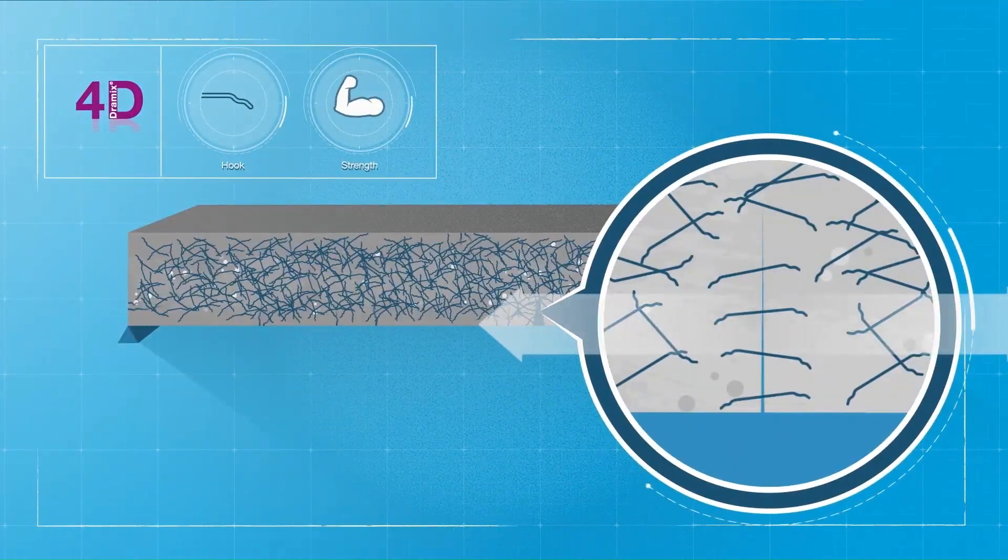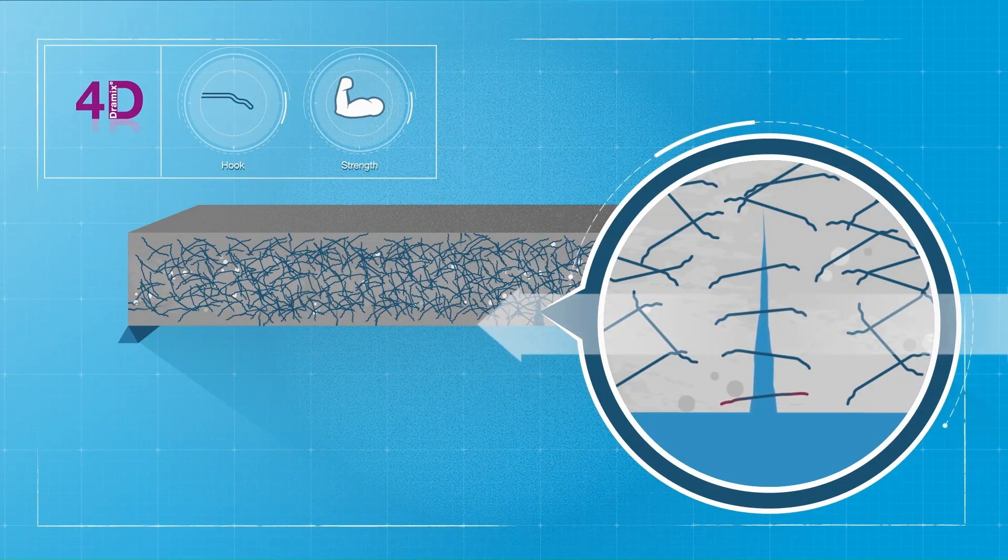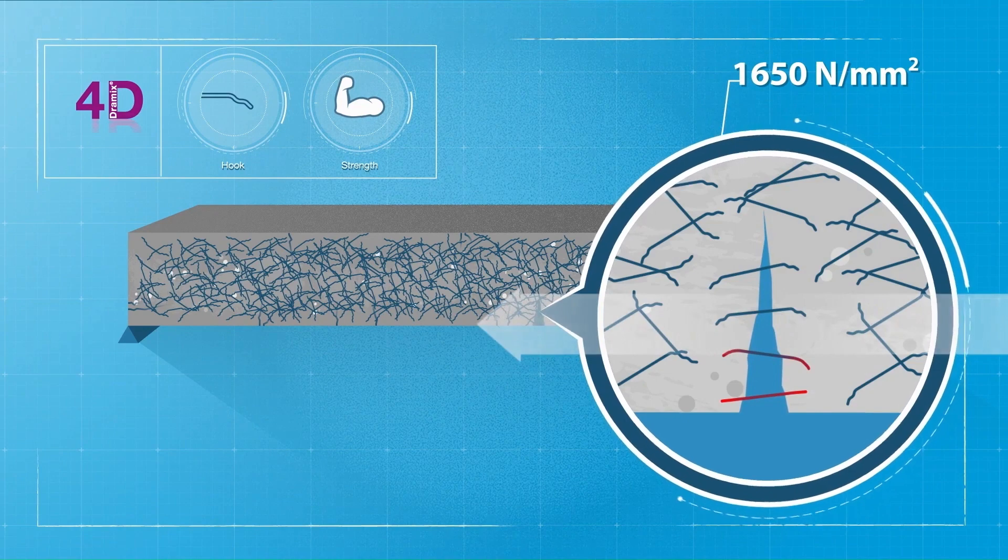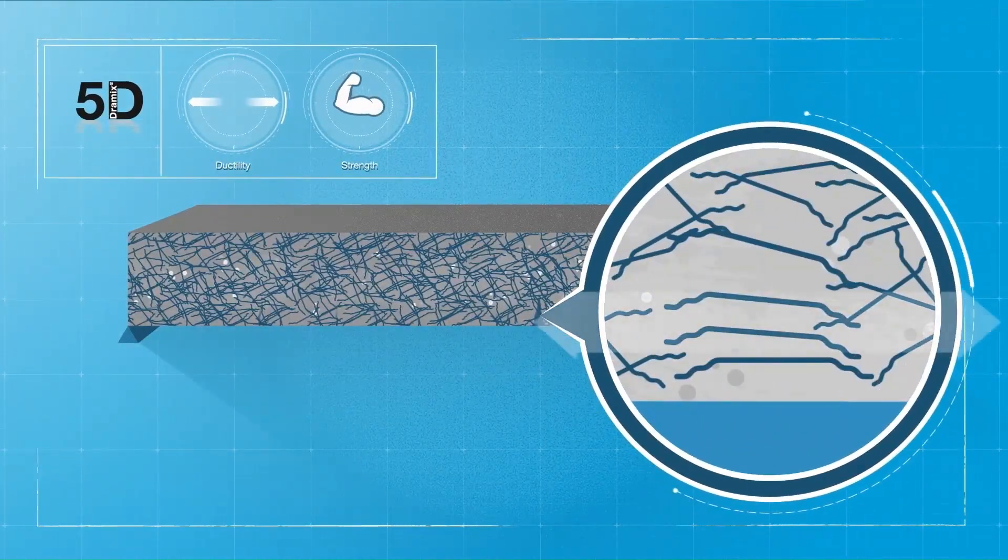Dramex 4D provides the same process but with even better anchorage and a significantly higher tensile strength of 1650 Newton per square millimeter or more. Dramex 5D behaves differently altogether.